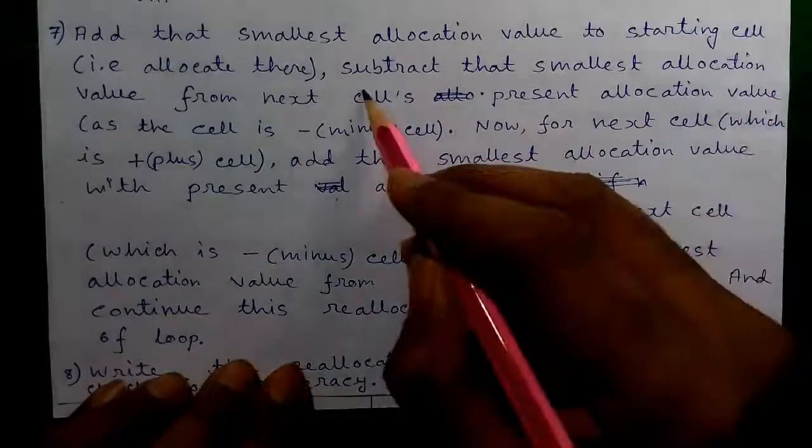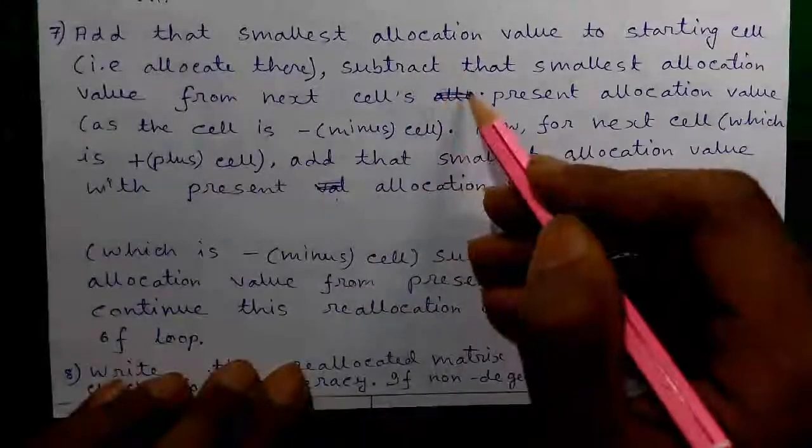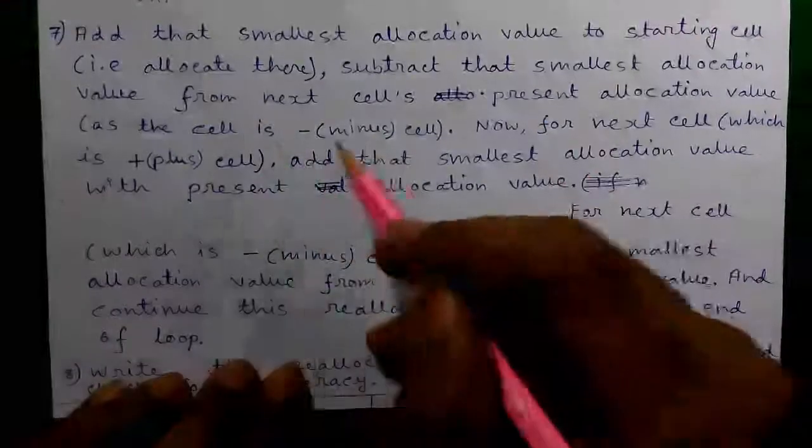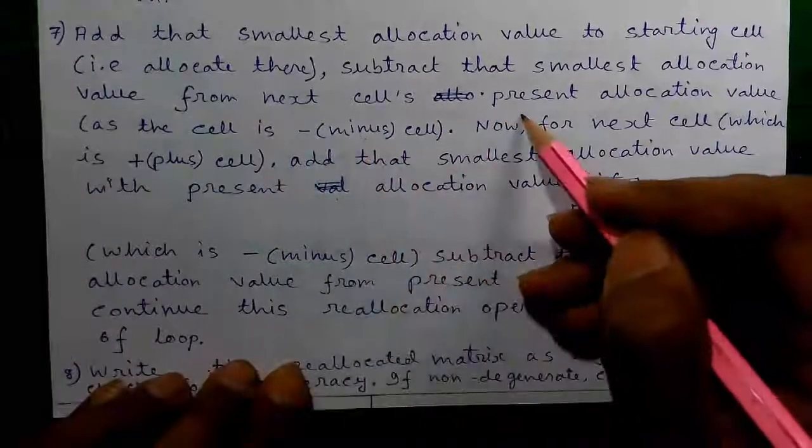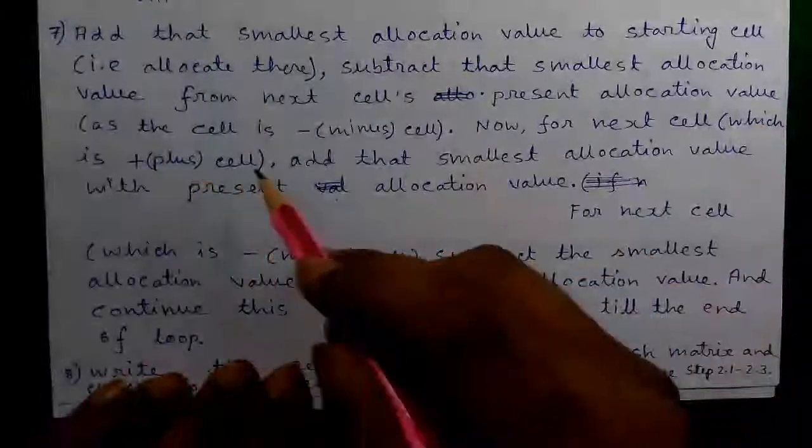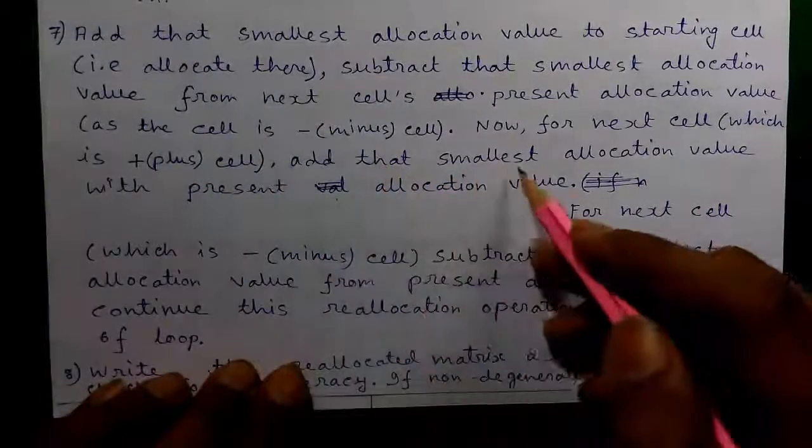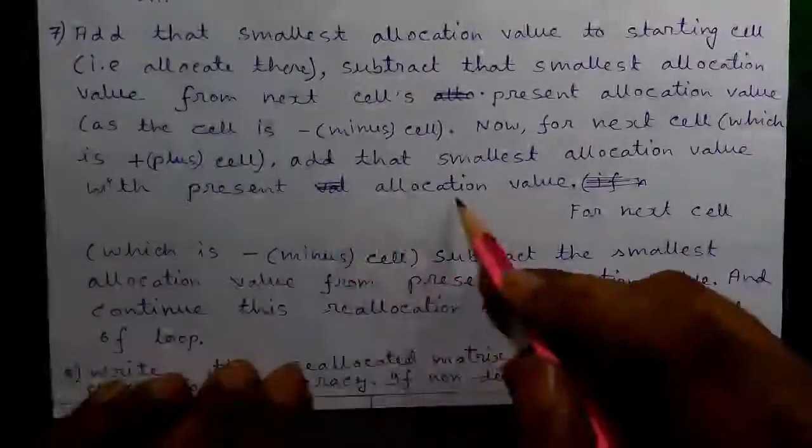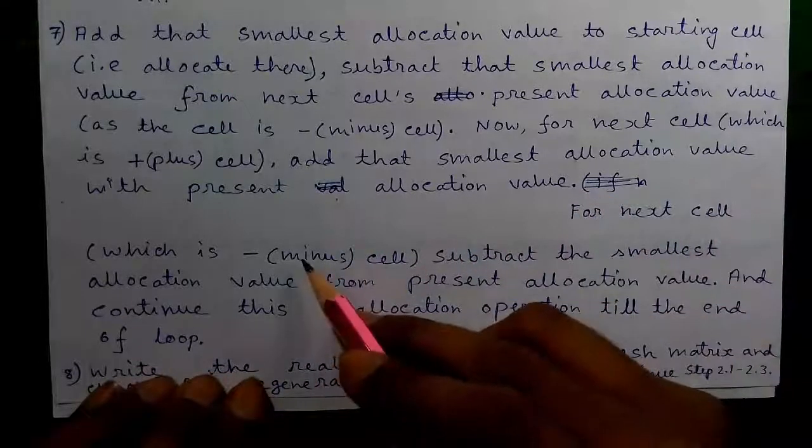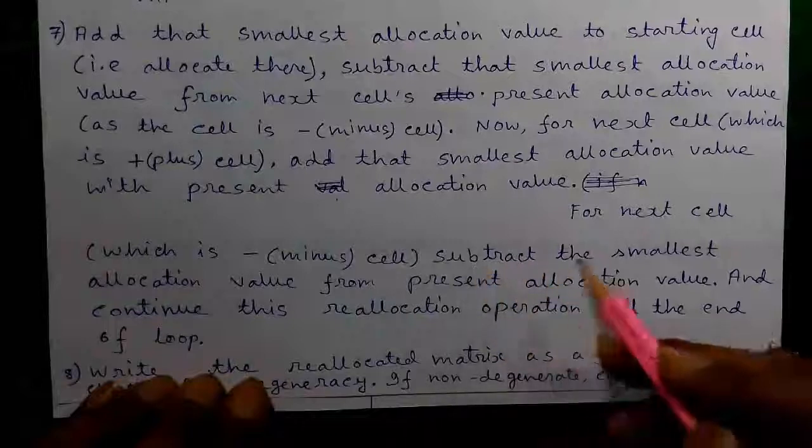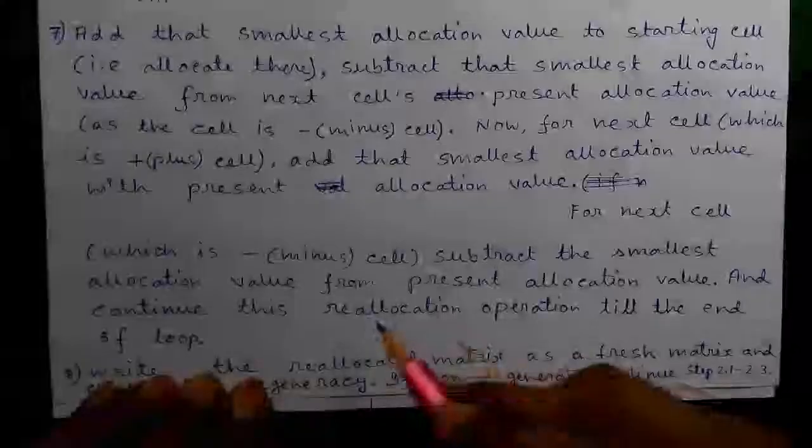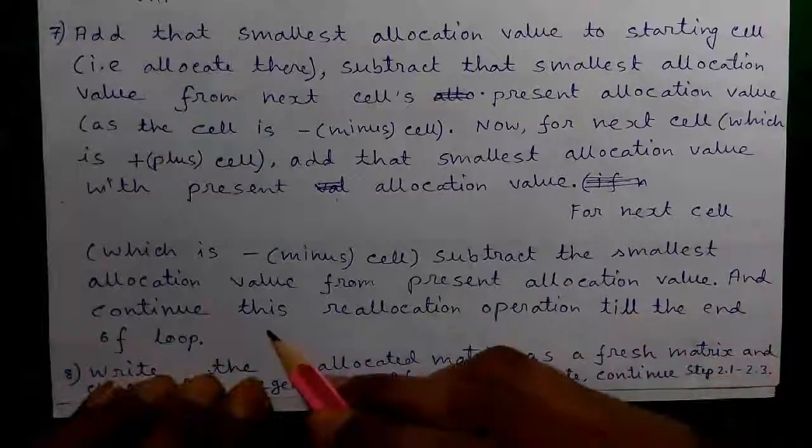Remember our first cell or starting cell will be a plus cell, that means we will add there. Next cell will be the minus cell, that means we will subtract there. Now for next cell which will be the plus cell again, add the smallest allocation value with the present allocation value. For next cell which will be the minus cell, subtract the smallest allocation value from the present allocation value. And continue this reallocation operation till the end of the loop.